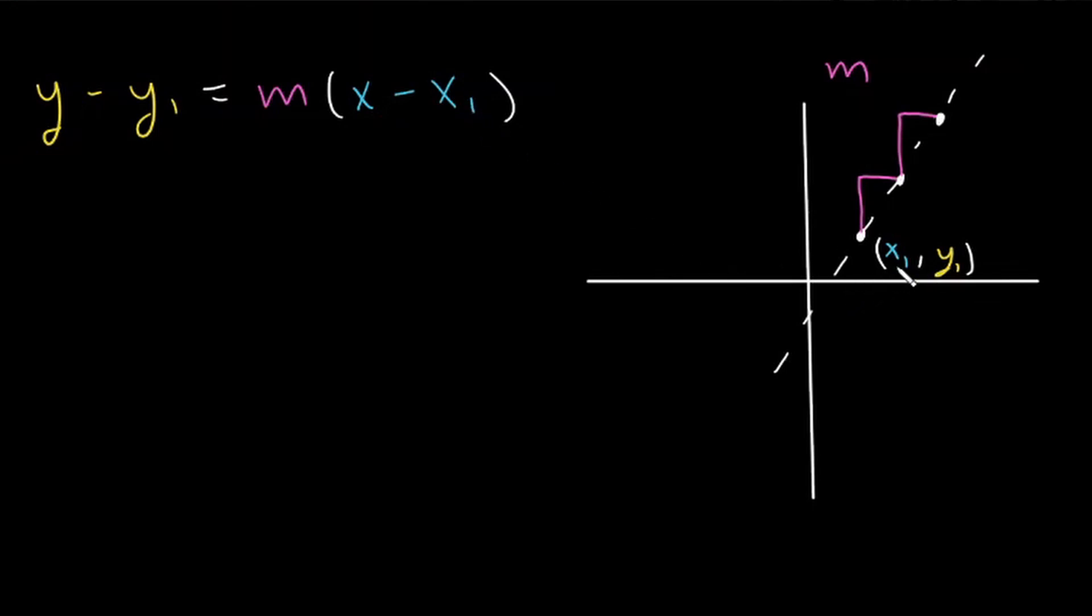So we would plug in our point x1, y1, and then we would solve for y if we wanted it in slope-intercept form, or we could solve to put it in standard form. But all we need is one point and the slope. So let's look at some examples.